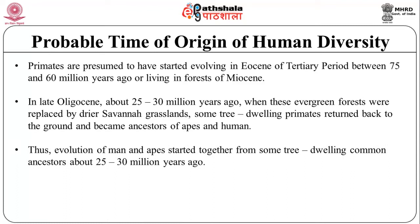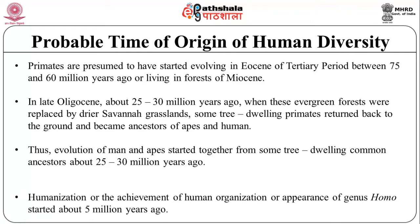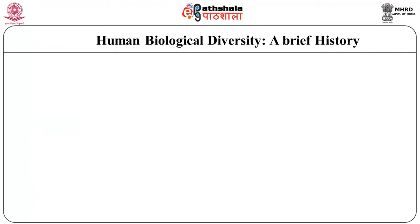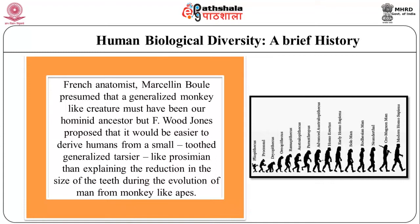In late Oligocene, about 25 to 30 million years ago, when evergreen forests were replaced by drier savanna grasslands, some tree-dwelling primates returned to the ground and became ancestors of apes and humans. Thus, evolution of man and ape started together from some tree-dwelling common ancestors about 25 to 30 million years ago. Humanization, or the appearance of genus Homo, started about 5 million years ago. The French anatomist Marcellin Boule presumed that a generalized monkey-like creature must have been our hominid ancestor.